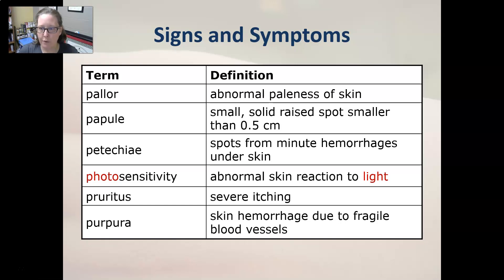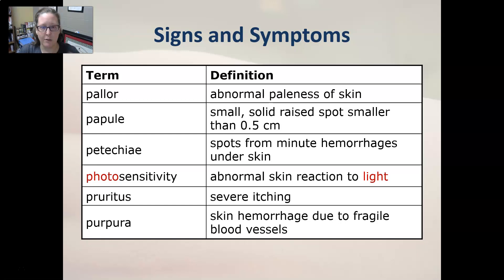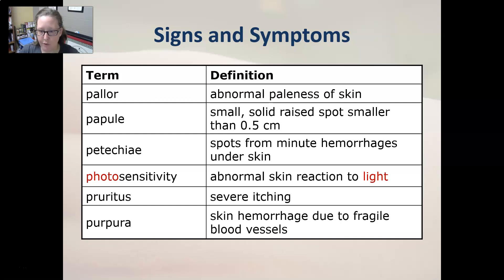...is a spot from minute hemorrhages under the skin — they're like pinprick little bruises that can dot around whichever area. Photosensitivity is an abnormal skin reaction to light. Pruritus is severe itching. Purpura is skin hemorrhage due to fragile blood vessels — the skin is usually bleeding under the surface.